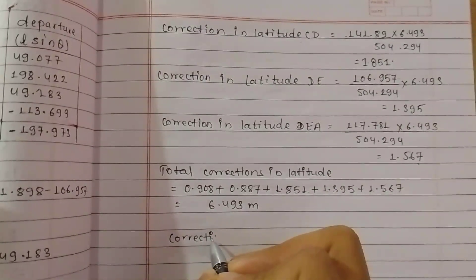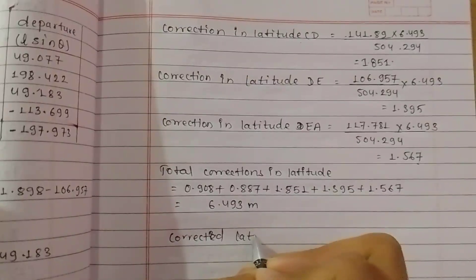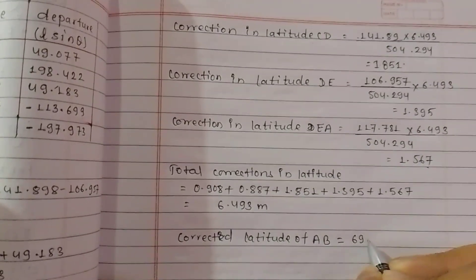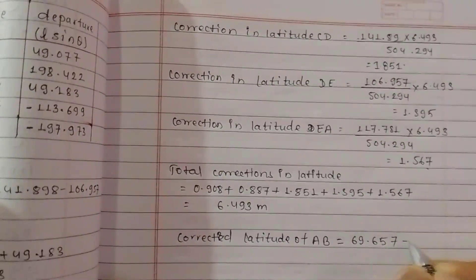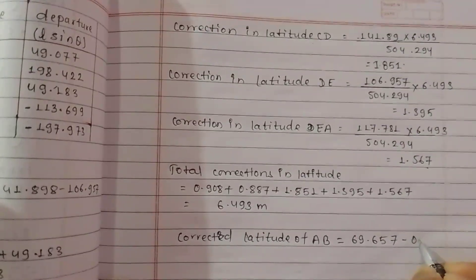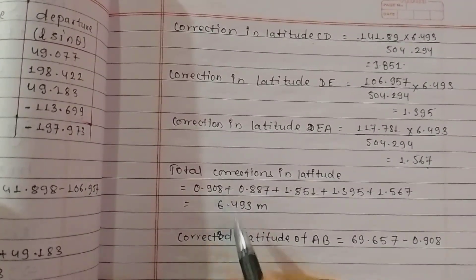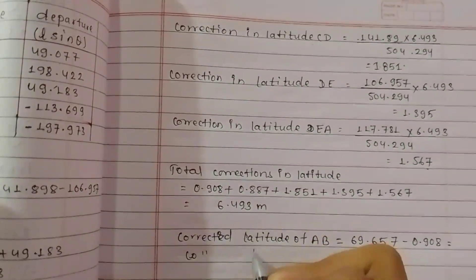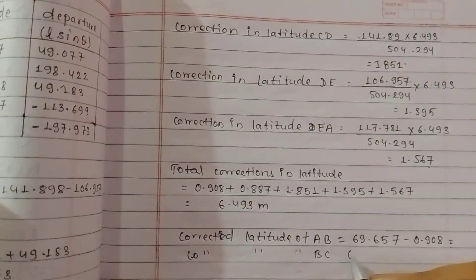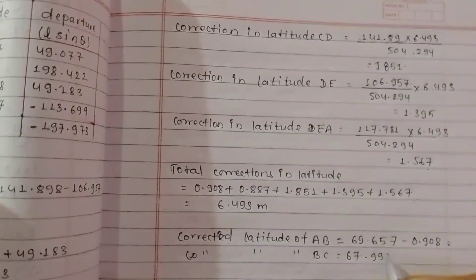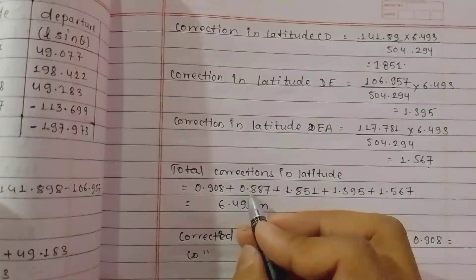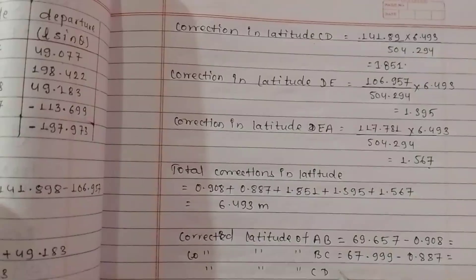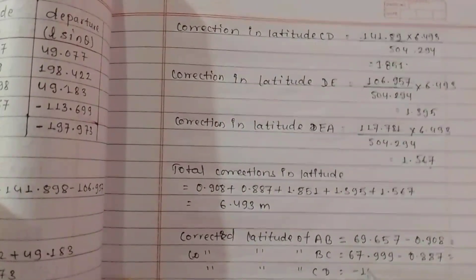Correction collected: corrected latitude of AB. The value was 69.657. Correction is negative going for BC — the corrected latitude of BC. The length is 67.999. The correction: 0.887. Line CD: corrected latitude is minus 141.89.